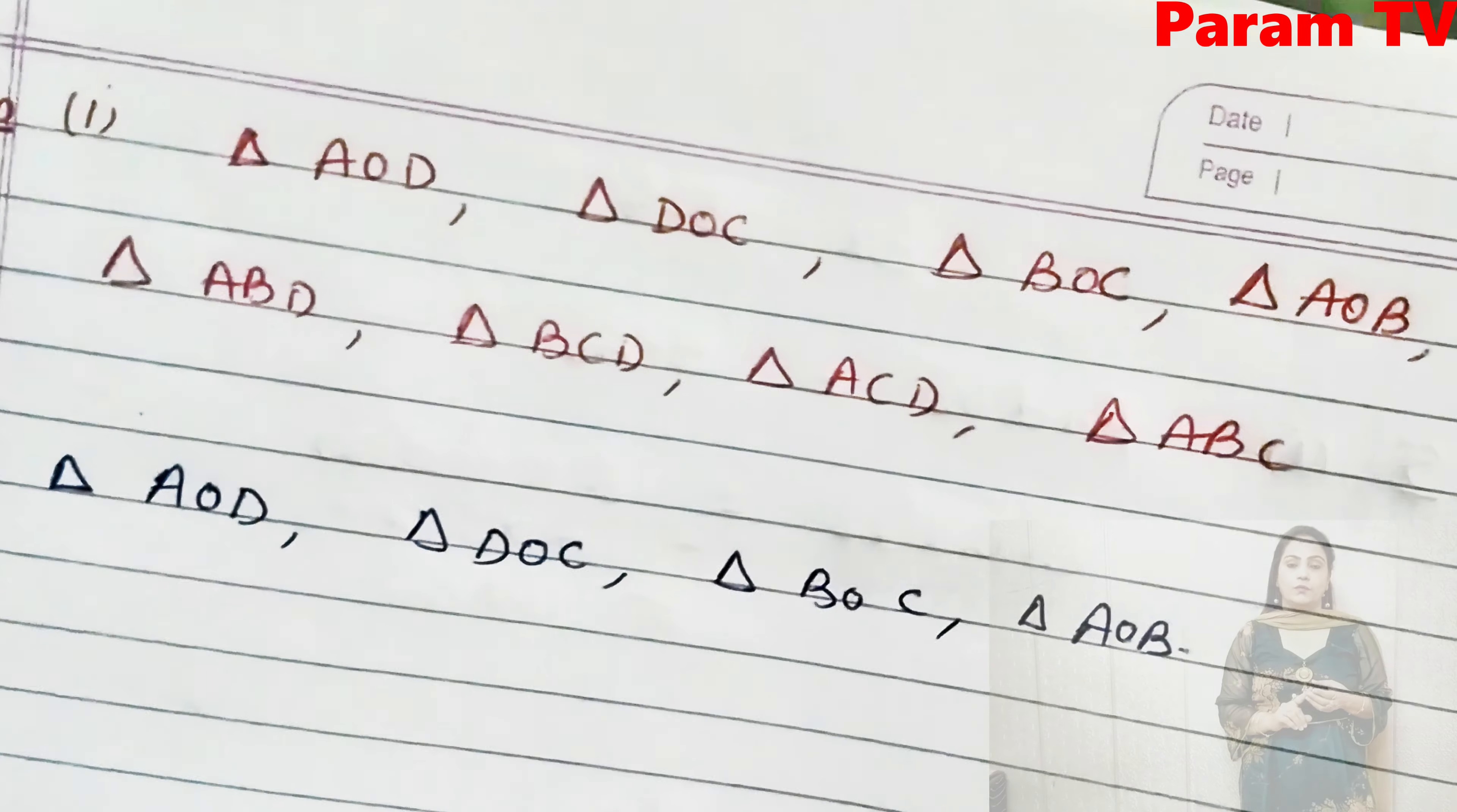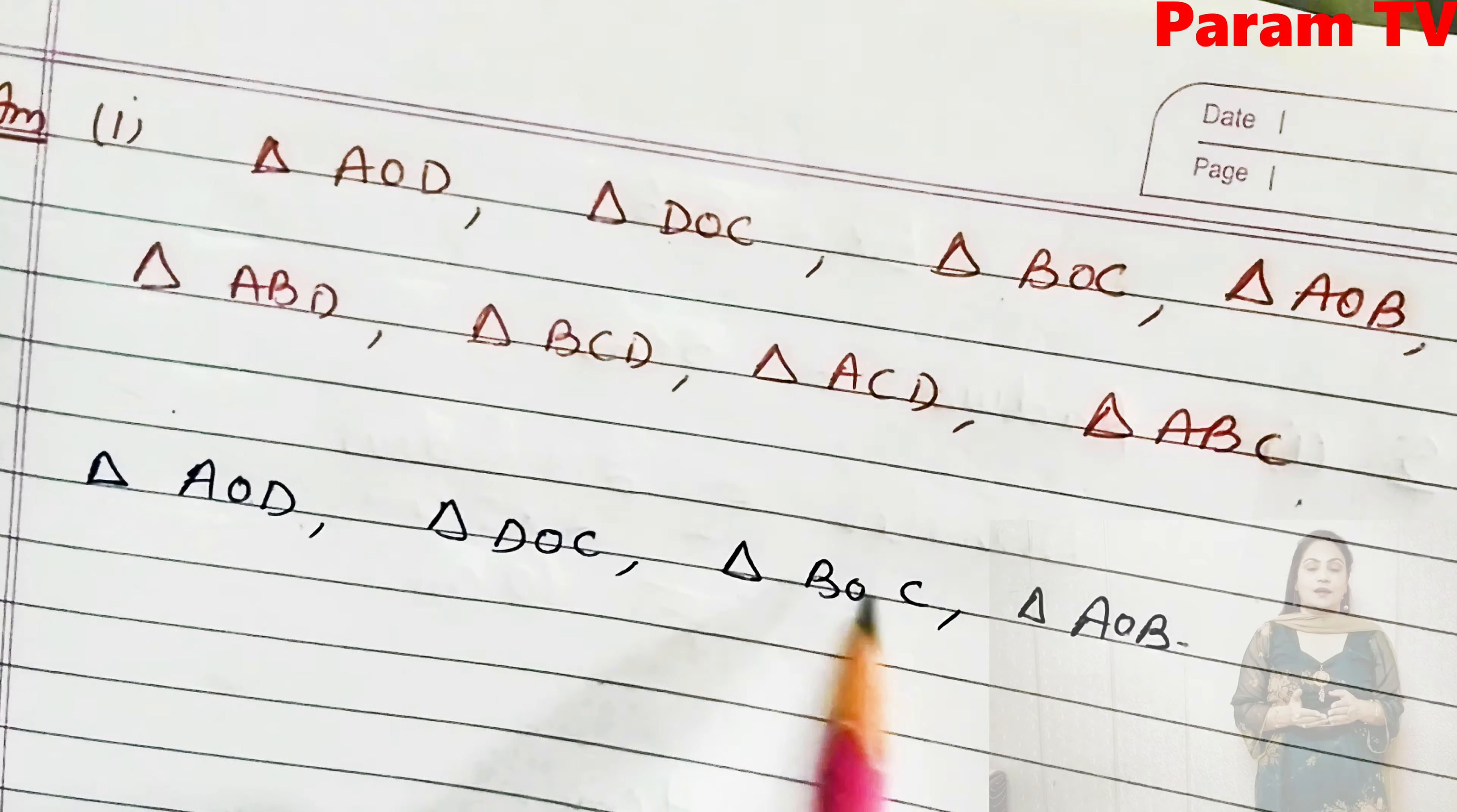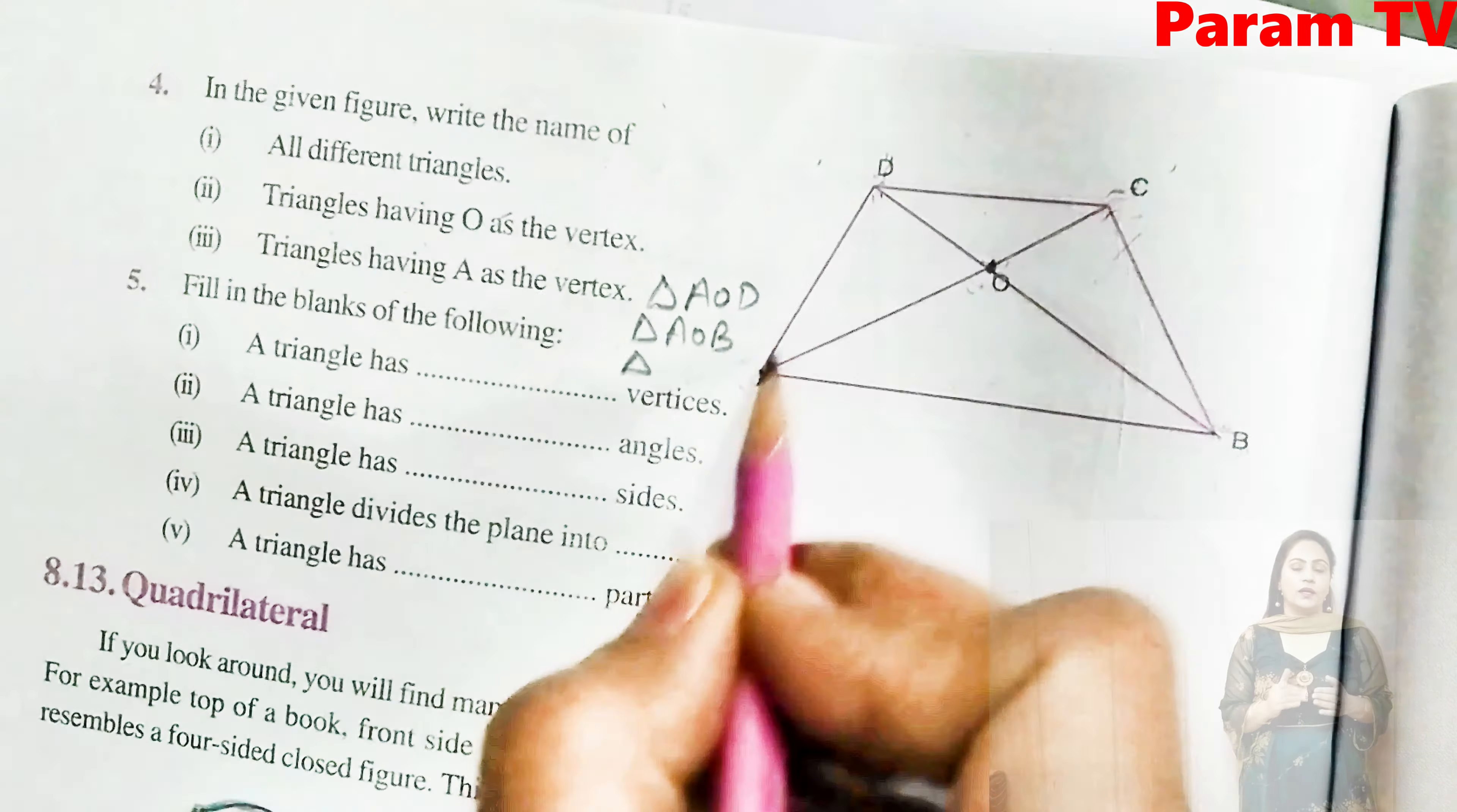So I have written this for you. First answer is triangle AOD, DOC, BOC, AOB, which I have told you. You have to write it in this way. Second part answer, in which O vertex is common, AOD, DOC, BOC, and AOB. And third part in which A vertex is common, that is triangle AOD, triangle AOB, and triangle ADB.